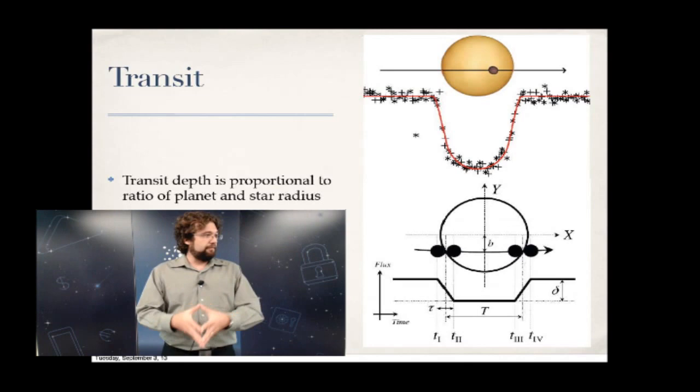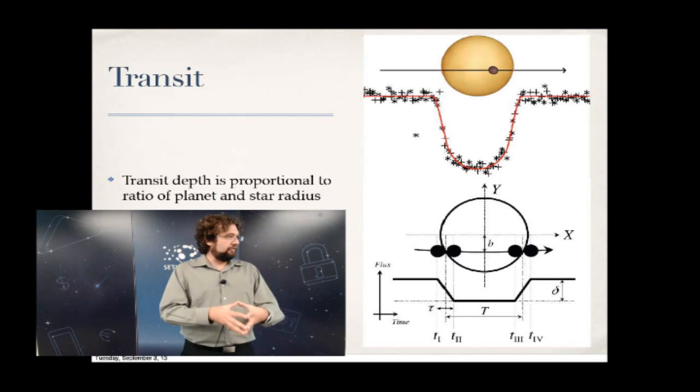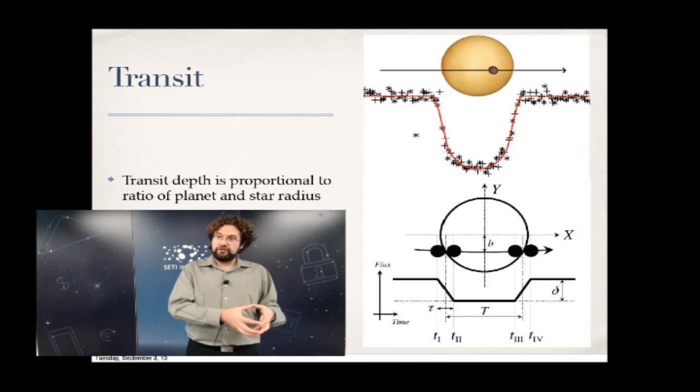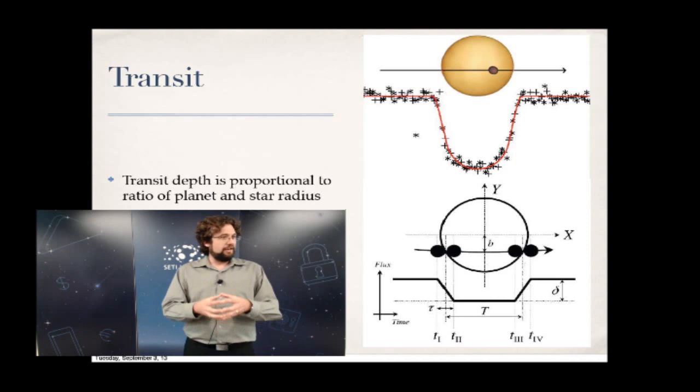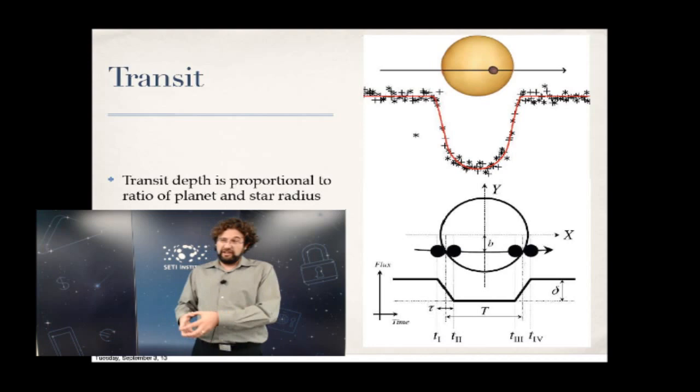All the information built into that transit allows you to derive three basic parameters. Transit depth is proportional to the radius ratio of the planet to the star. Transit duration, via Kepler's third law, is related to the mean stellar density of the host star — you measure orbital velocity during transit and combine it with orbital separation to get a geometrical measurement of stellar density.